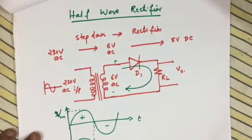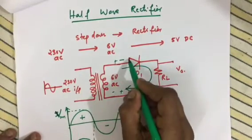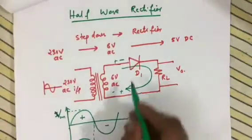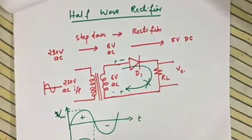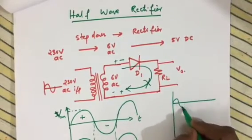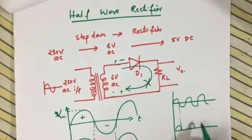During the negative half cycle, the diode is reverse biased. When reverse biased, the diode is off — there is no current flow, so the output is zero. Again during the next positive half cycle, the output appears. So for a half wave rectifier, only the positive half cycles from the input appear at the output.